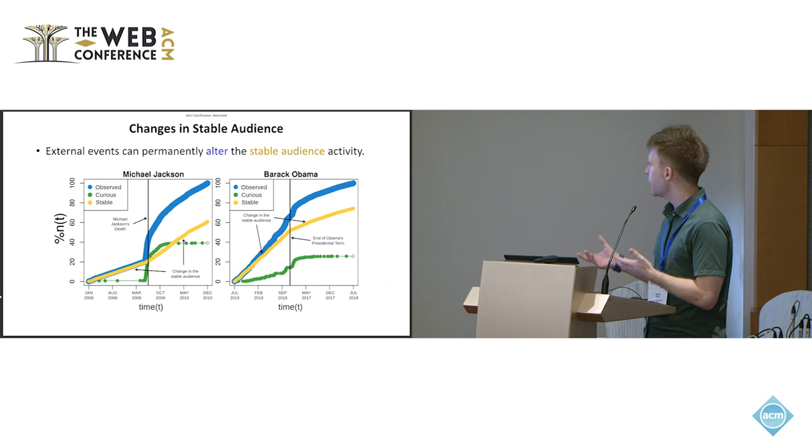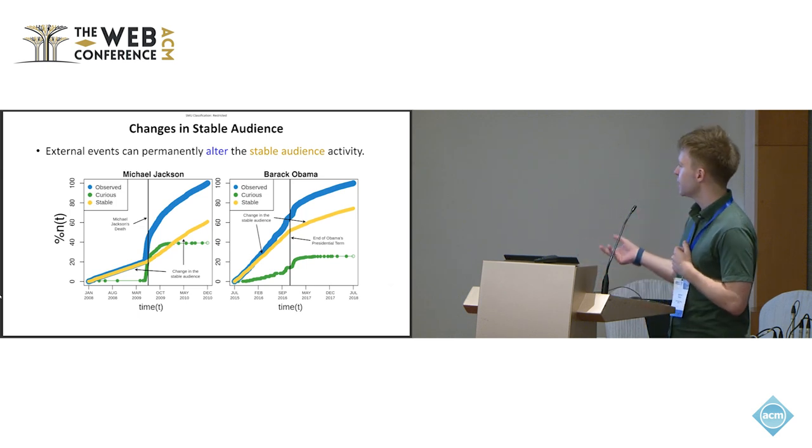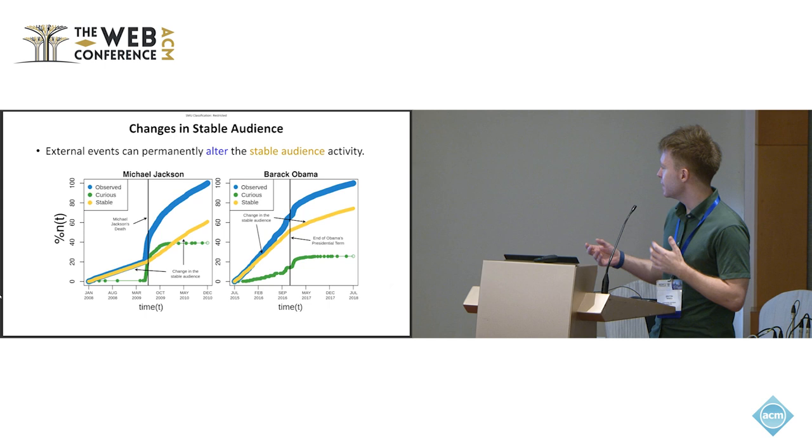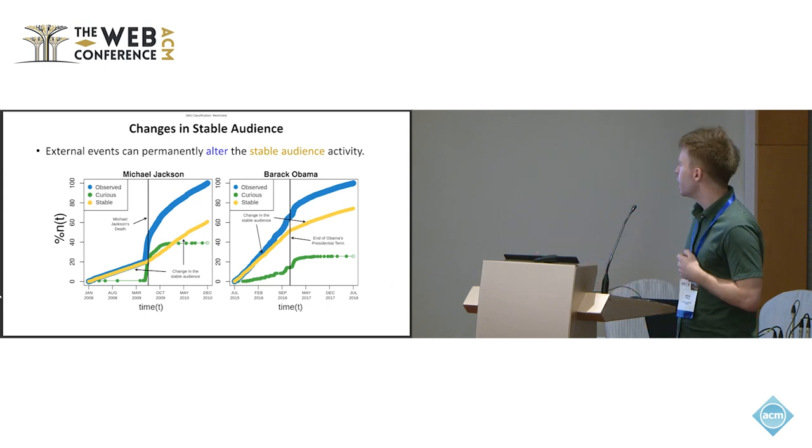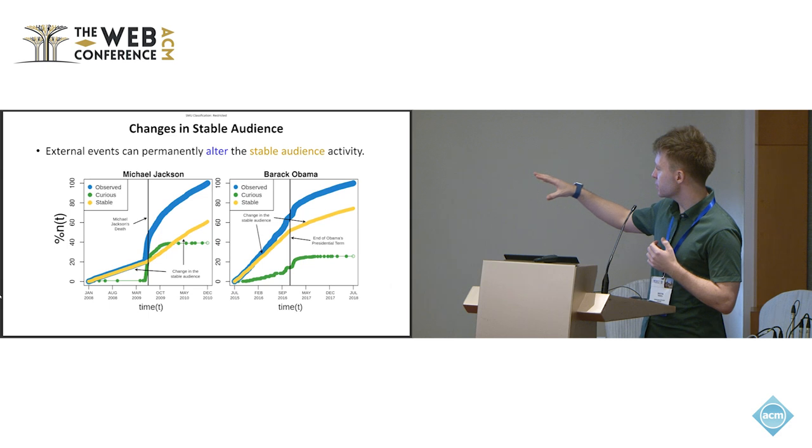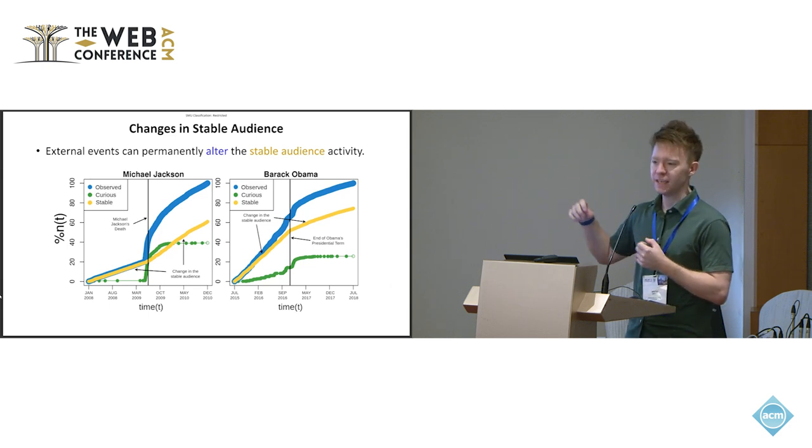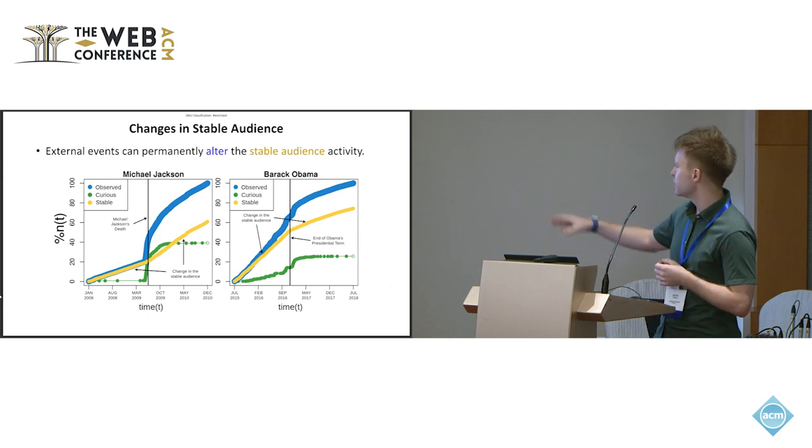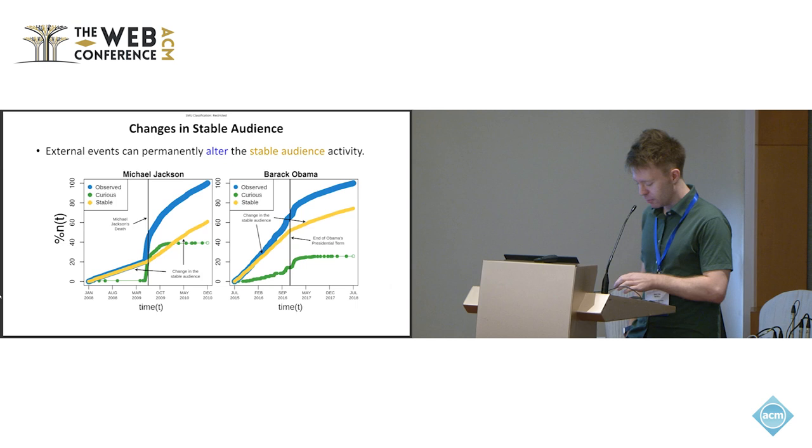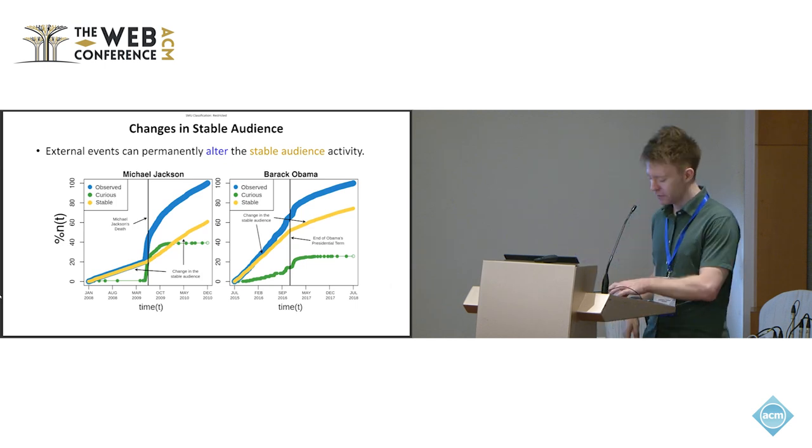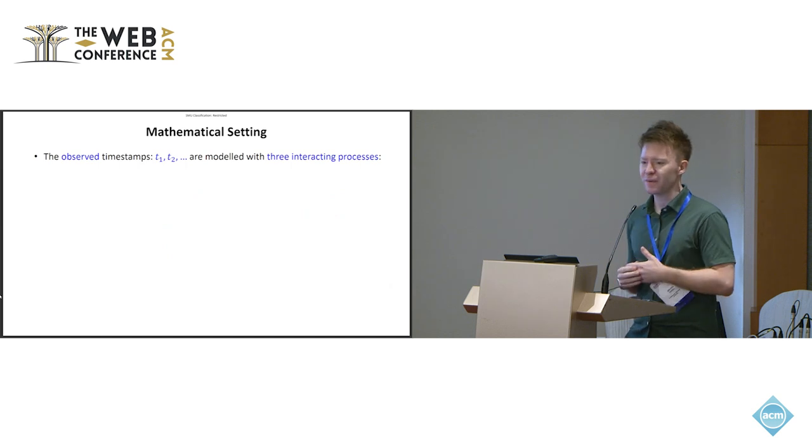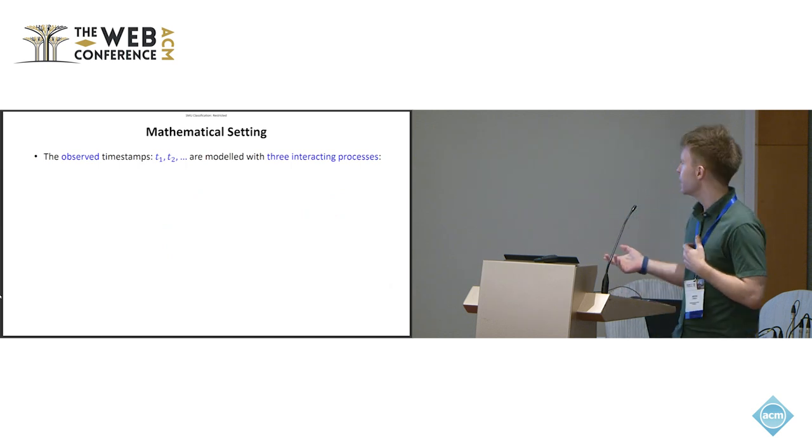But really, the next point that we're particularly interested in is the interaction between those two processes. Because here, we have those two highly traumatic events, Michael Jackson's death and the end of Barack Obama's second term in office, and they didn't just cause this explosion of activity around the event itself, but they also permanently altered the level of interest that we have in the topic inside the stable audience. So being able to model this mathematically is one of the key novelties of our model that we're going to talk about in a little bit more mathematical detail now.